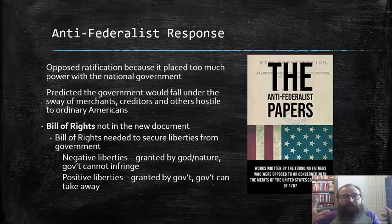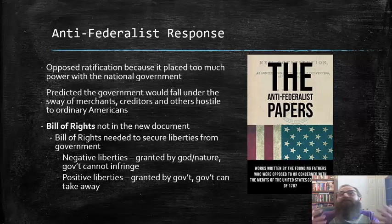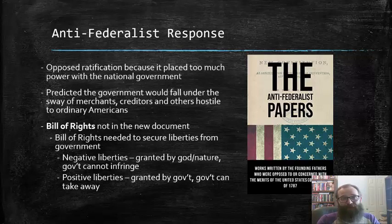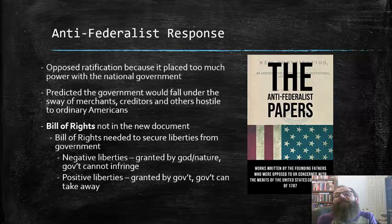This is generally couched in the idea of the difference between negative liberties and positive liberties. Negative liberties are those granted by God or nature, inherent to the human condition, and thus those that the government cannot infringe upon. Positive liberties are those granted by the government, and if they're granted by the government, then the government can also take those liberties away. The fact that there was no Bill of Rights scared the Anti-Federalist camp, because they feared that without directly enumerating those rights on paper, the government would have no brake on its ability to run over those rights when it deemed necessary for its own purposes or, quote unquote, for the greater good.